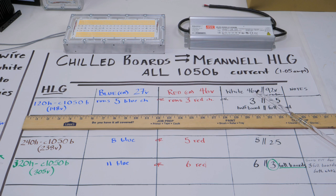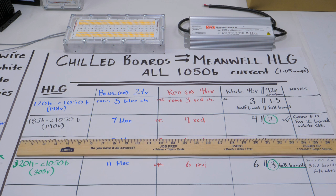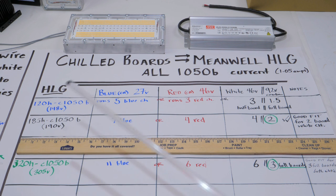As we talk about the HLG 120, these are all 1050 milliamp. It's a decent fit - it runs five blue channels, but you're probably not going to have five boards. It runs three red channels, so if you have a three board configuration, the HLG 120 is a great choice for the red channel only.